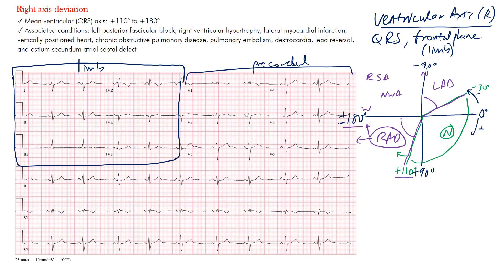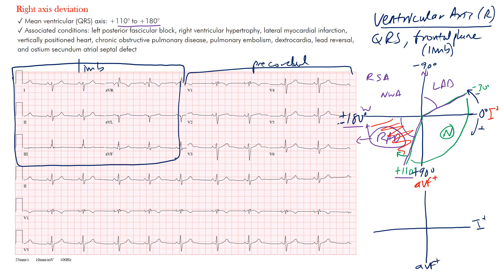Right axis deviation is between positive 110 and positive 180, in this region here. We also need to know where the leads are placed. Focus on lead 1 — the positive end is here — and lead AVF is down here, the positive end of AVF. When we look at this, we're asking whether the complexes are mostly positive or negative, meaning are they heading towards that lead or away from it.